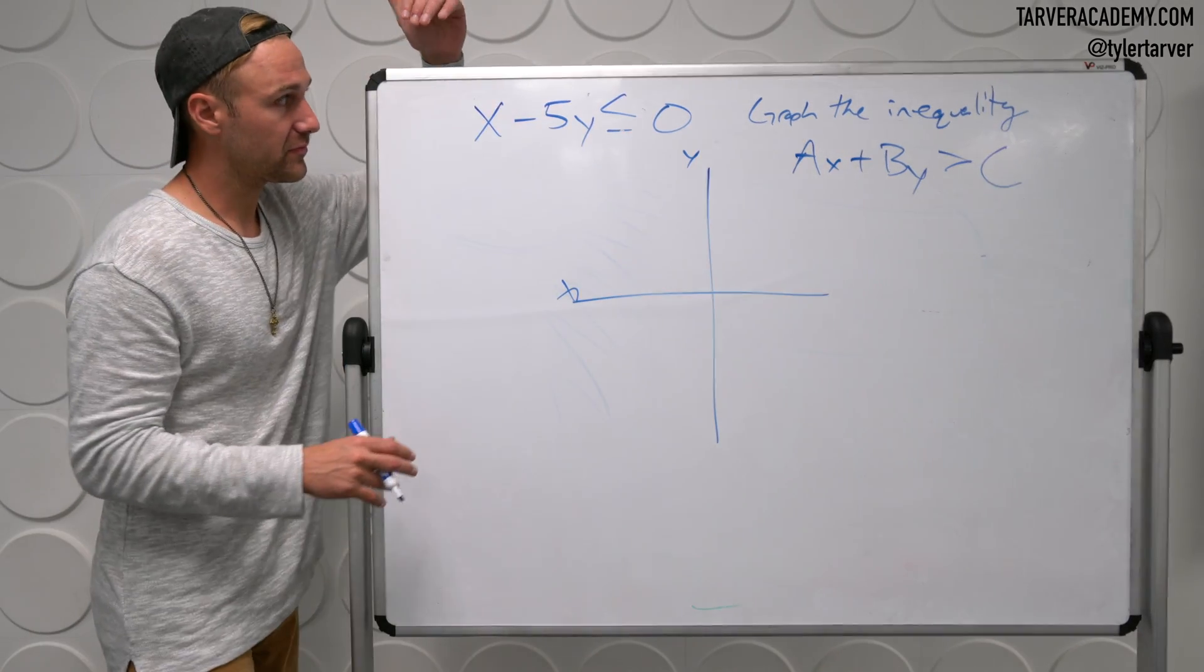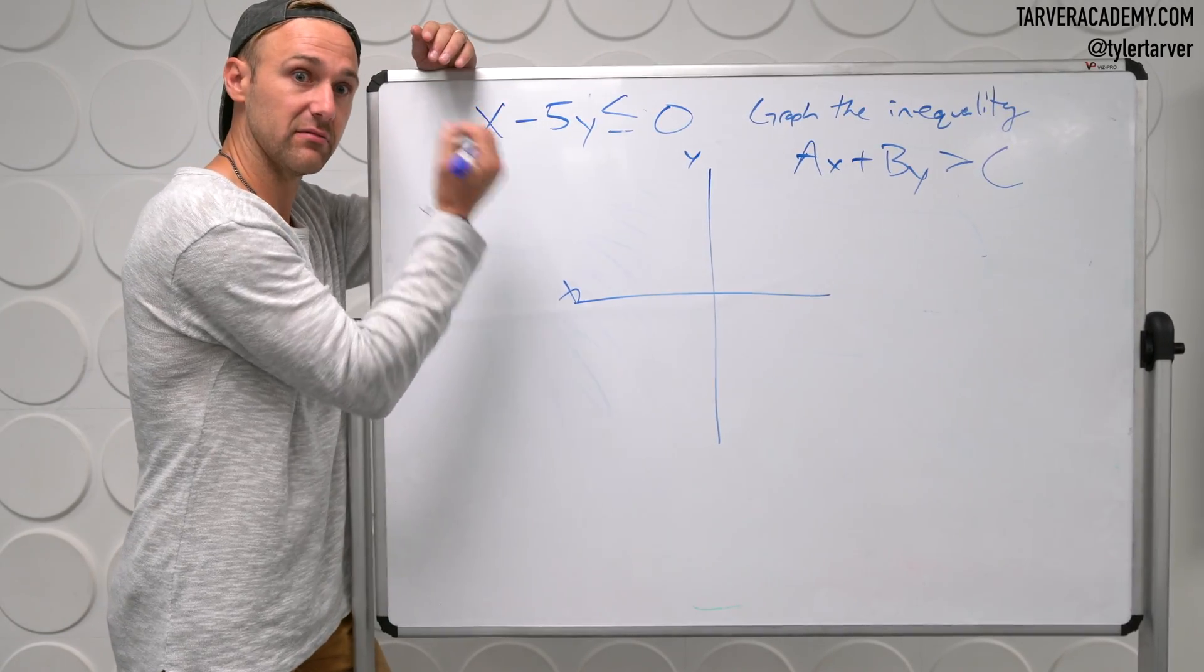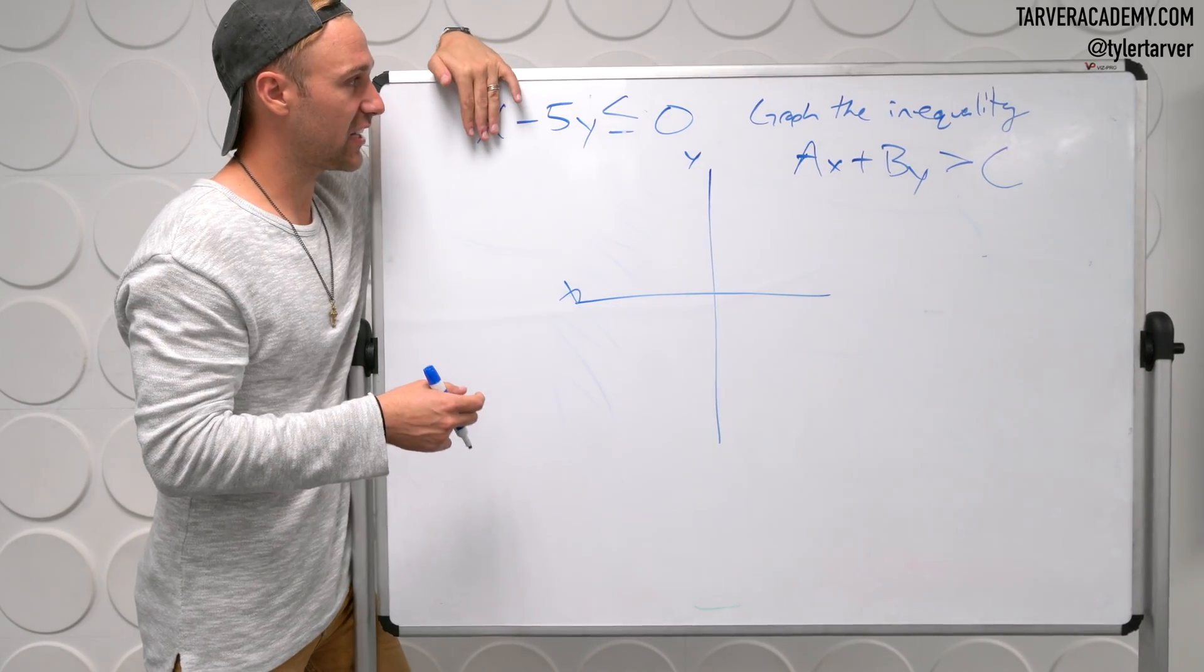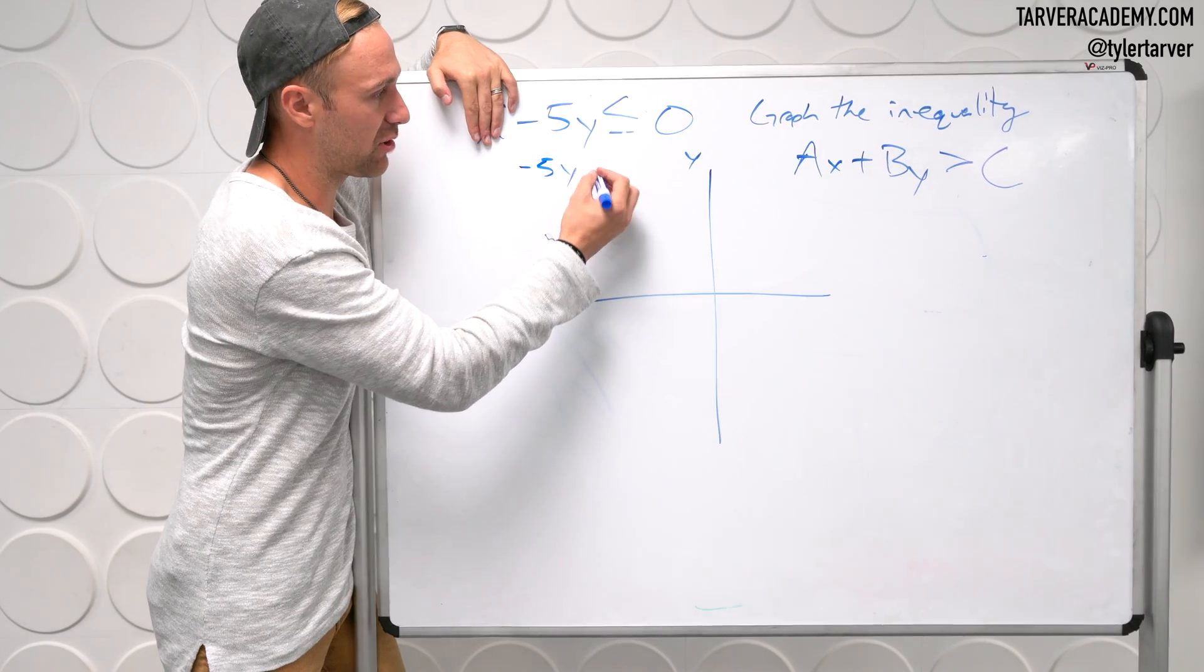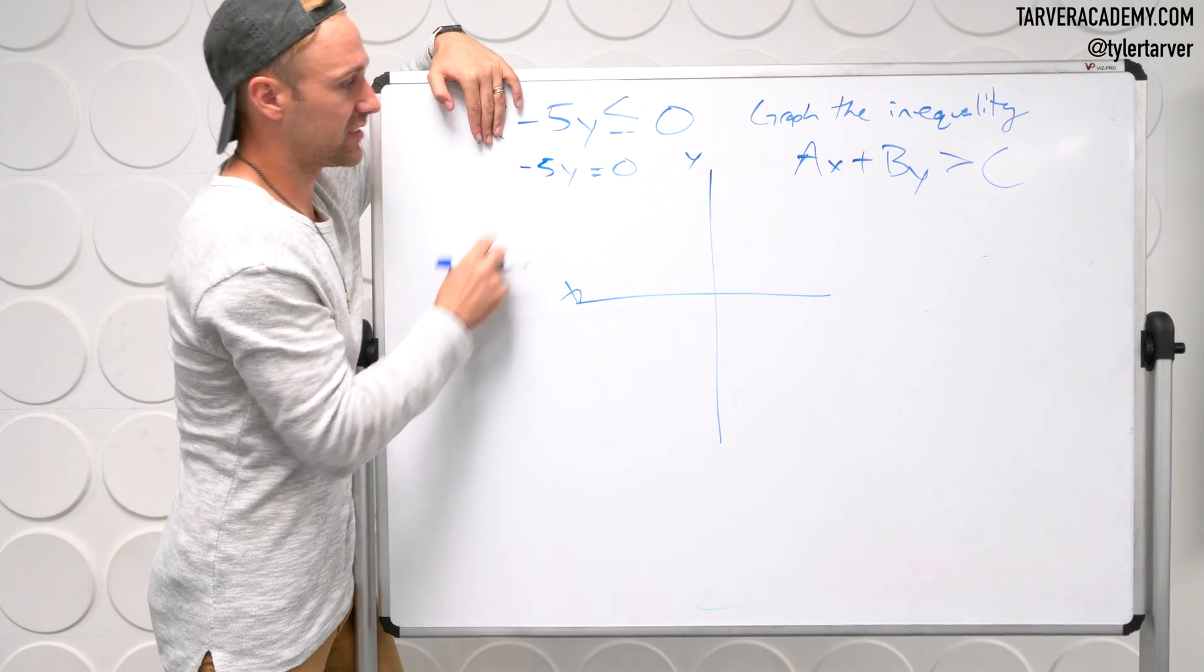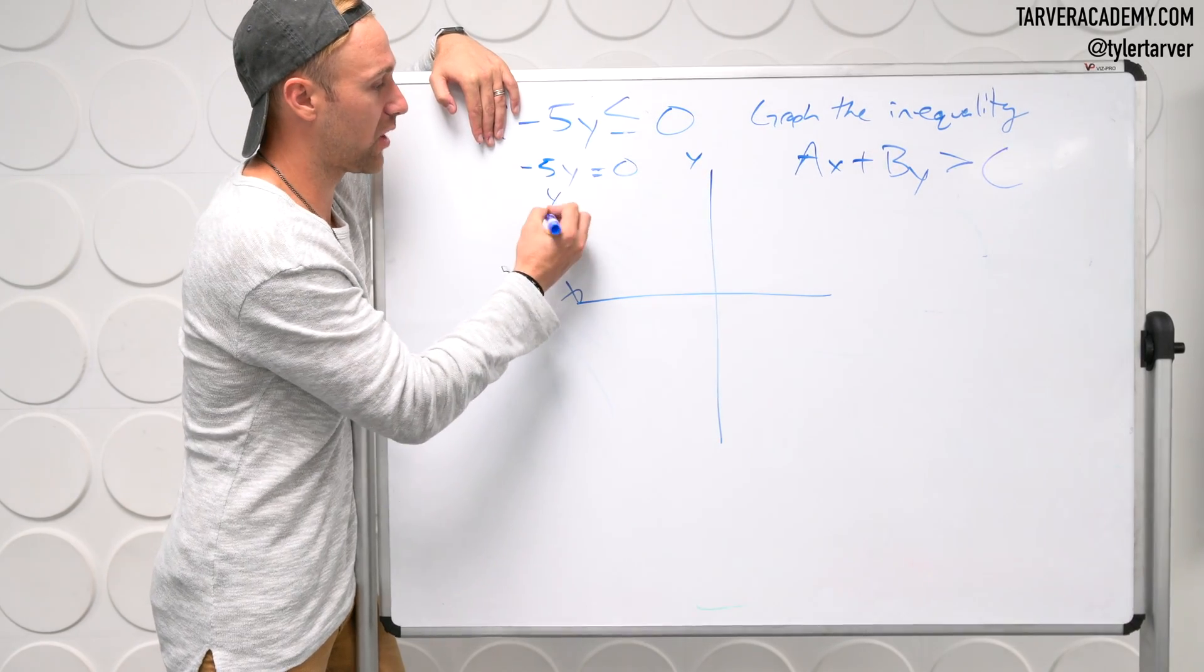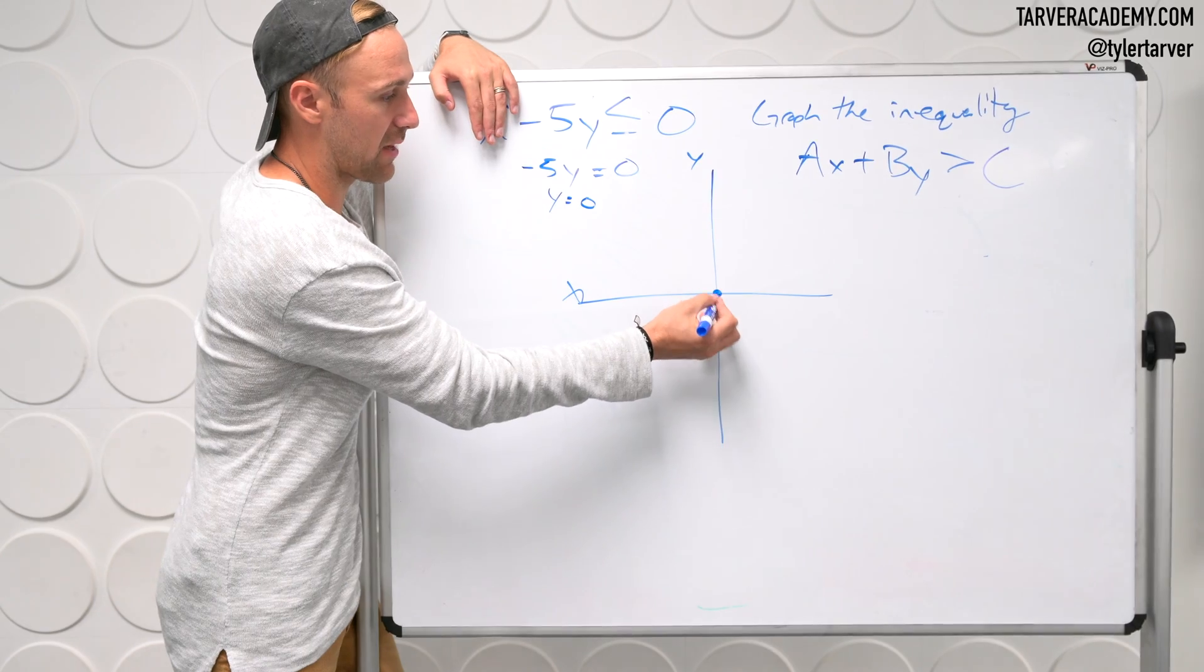So for instance, to find the y-intercept, I'm going to pretend like x is zero. You could put zero in or you can just cover it up. So you've got negative five y. I said you can pretend this is an equal sign. Zero. What do I do to get y by itself? Divide by negative five. Very good. Which equals zero. So that's my y-intercept.